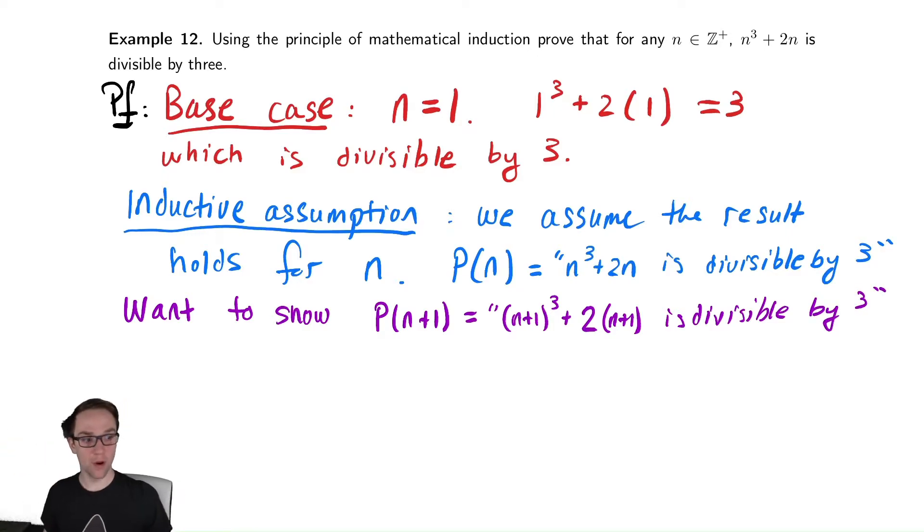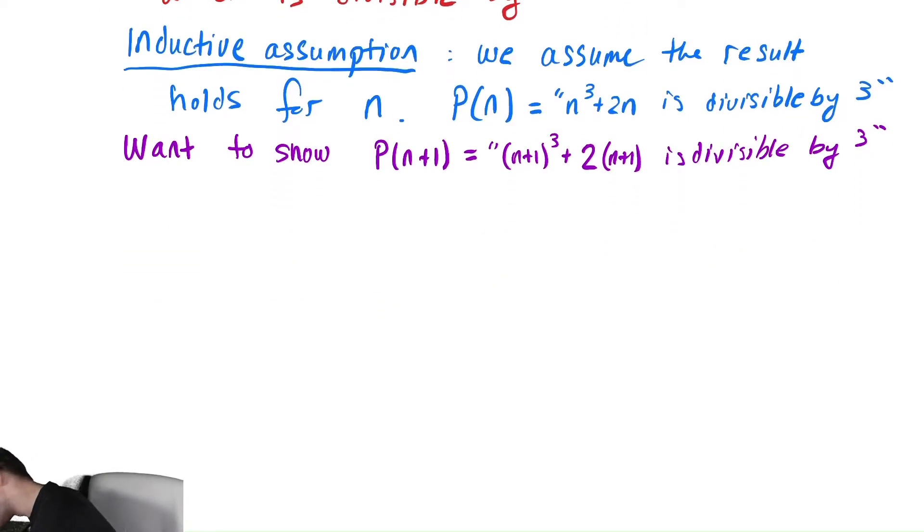And now our goal is to do something here to try to show that that is true. Just like the last case, we're going to start by writing down that expression for P(n+1) and then trying to use whatever information we can to rearrange it and write it in different ways until eventually we can use our inductive hypothesis. And then we'll hopefully show that it's divisible by 3 from there. So, we're going to consider that expression, so consider